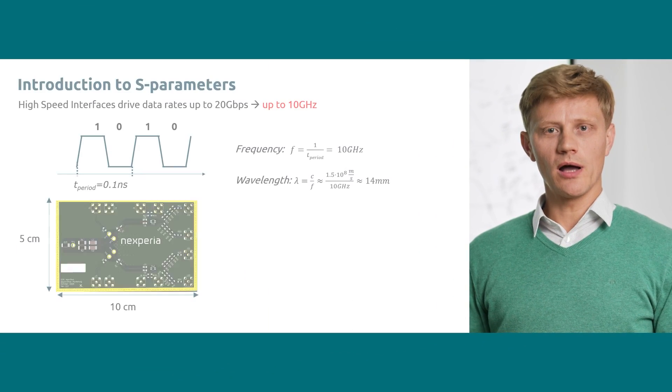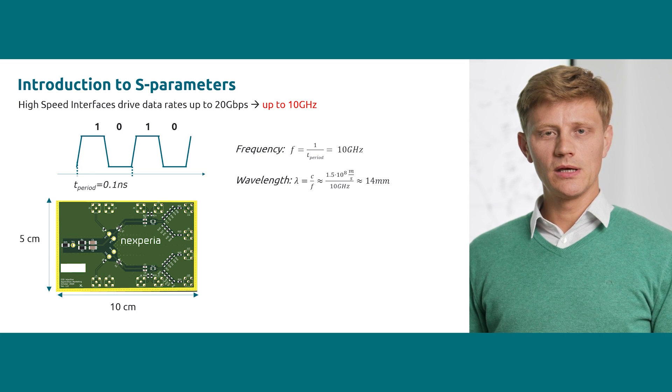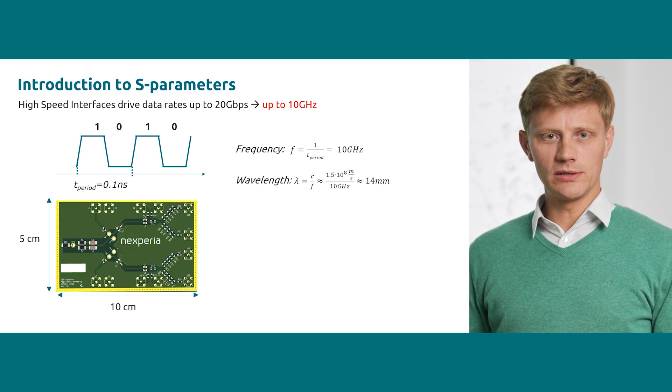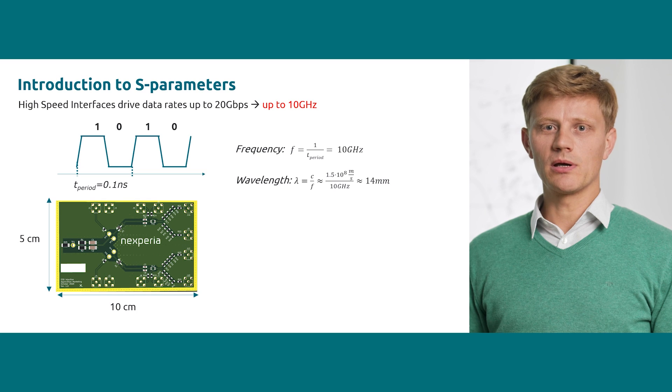In high-speed interfaces the ability to extract typical electrical values on data lines as voltage and currents in the direct manner becomes very difficult. This is because in digital systems the data transmission is done using bits which are counted as one and zero. To transfer a high amount of data the number of bits in a time slot becomes very high.